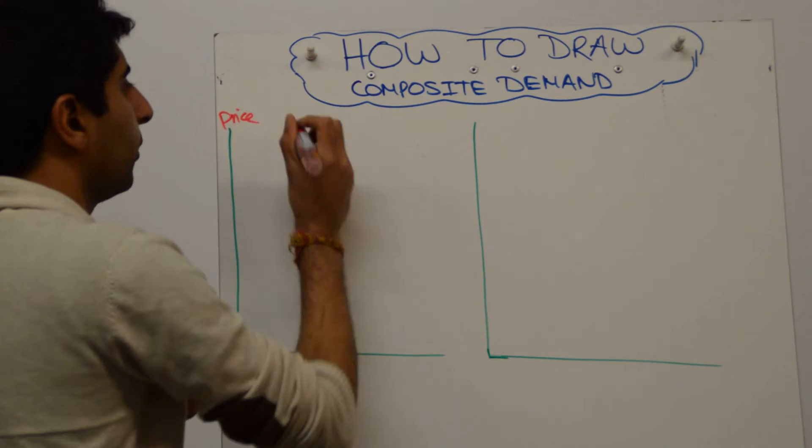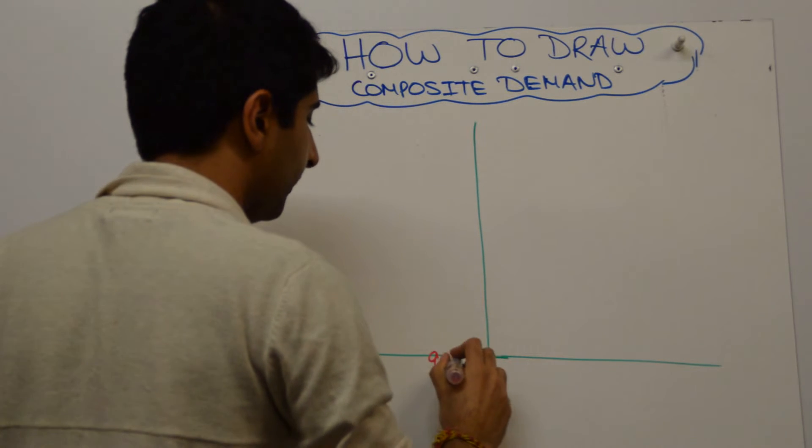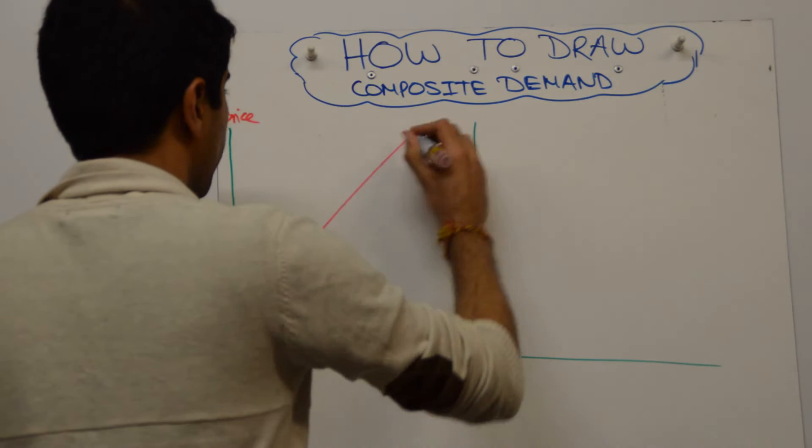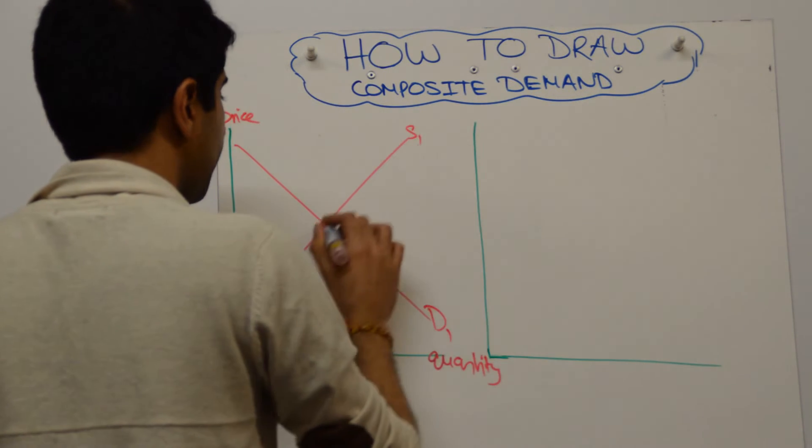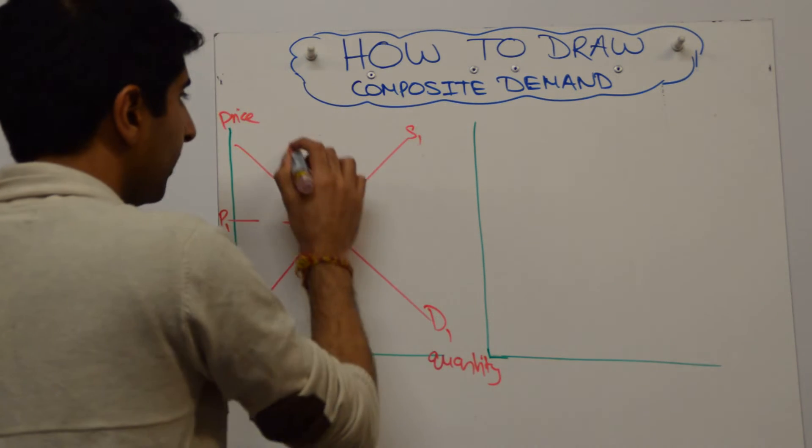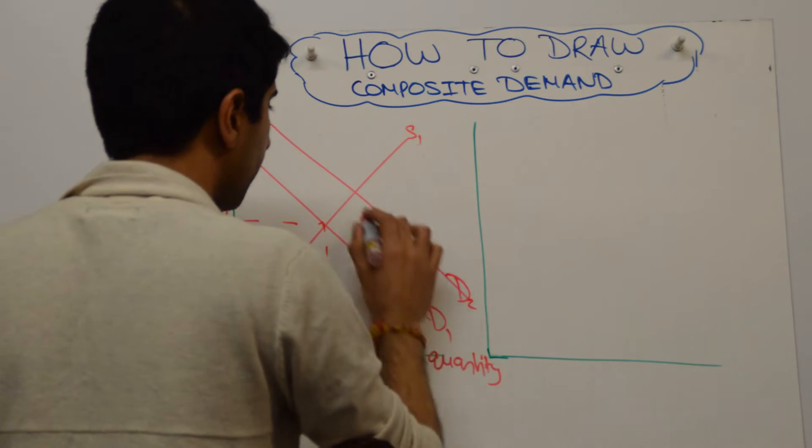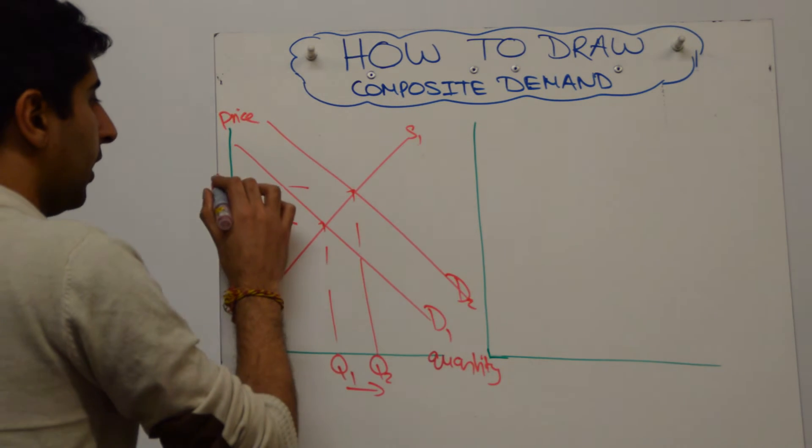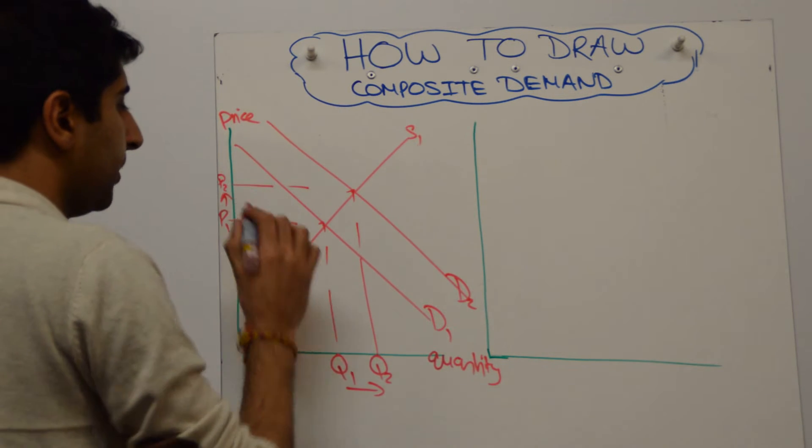Well we have price on the y-axis and quantity on the x-axis, so this could be the market for bread. We're going to show initial equilibrium where supply meets demand. We're going to have a price of P1 and a quantity of Q1. Let's now assume that demand for bread goes up, which leads to a higher quantity in the market, Q1 to Q2, and the price of bread going up from P1 to P2.